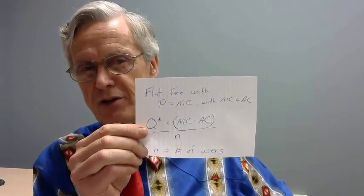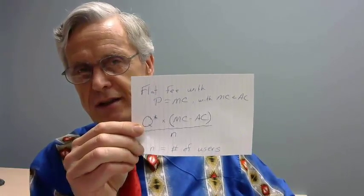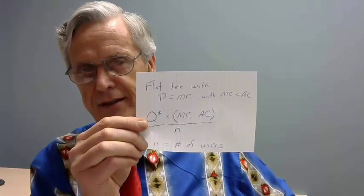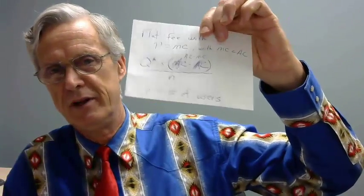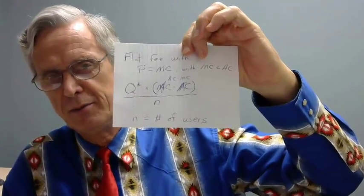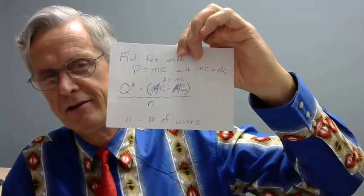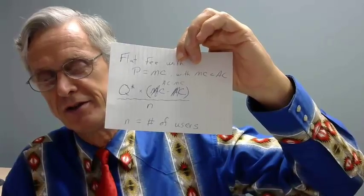You set your price equal to marginal cost, and then you set a flat fee equal to the difference between average cost and marginal cost — AC minus MC — so average cost is bigger than marginal cost. That difference times the amount consumed with price equal to marginal cost: that dollar amount has to be divided up among the end users via a flat fee — monthly, annual, whatever.